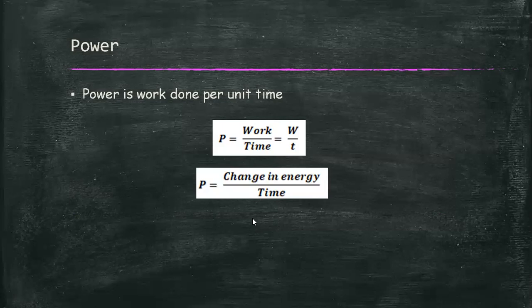As an alternative, an expression for power can also be obtained by dividing time to both sides of the equation work equals force times distance. And we get the average power: power equals force times the average speed.